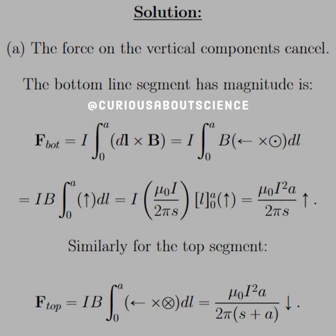For the analytic part of the solution for scenario A, the force on the vertical components cancel — that's just a symmetry argument, just like we used in electrostatics. The bottom line segment has a magnitude: the force bottom is equal to I, integrated from 0 to A — because that's the length of the loop — of DL cross B.